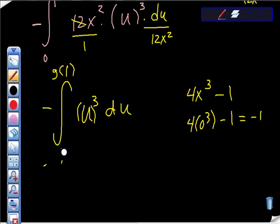So that would give me negative 1 here, that would give me negative 1 right here. And g(1) would be 4 times 1³ minus 1, which is 4 minus 1, which is equal to 3. So 3.